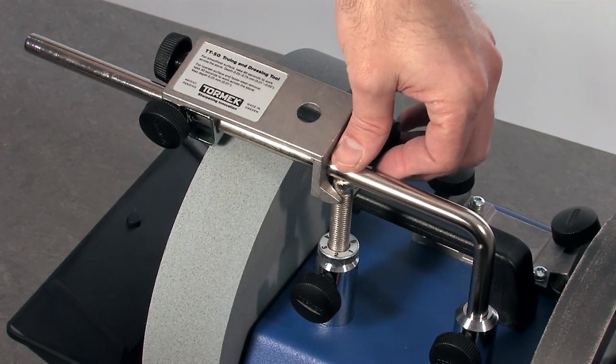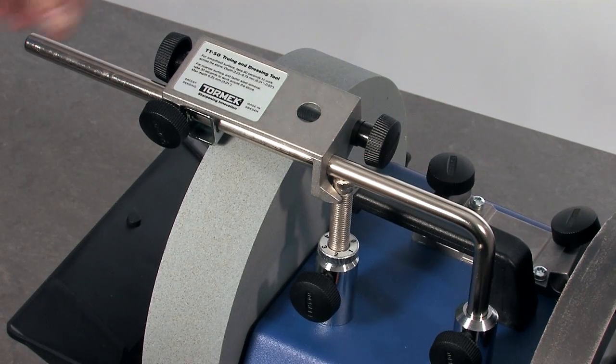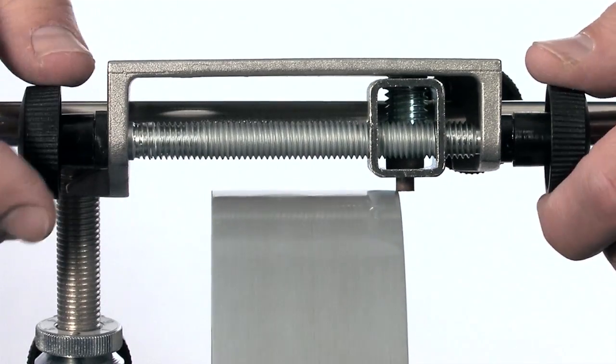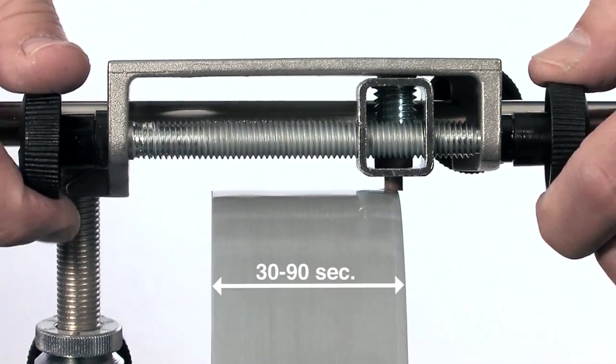Push down on the universal support above the micro-adjust and lock it into position. Start the machine and feed the diamond tip at a steady rate. Take 30 to 90 seconds to cross the stone.